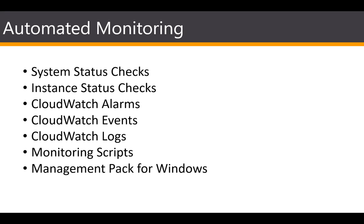Instance status checks monitor the software and network configuration of your individual instance. These checks detect problems that require your involvement to repair — such as a failed system check, exhausted memory, or an incompatible kernel. These two are automated, along with CloudWatch alarms, events, and logs.